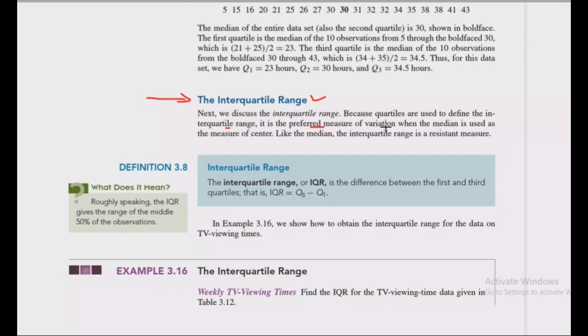This is the variation calculation. This is the extreme observation. This is the interquartile range, the preferred measure of variation when the median is used as the measure of center.